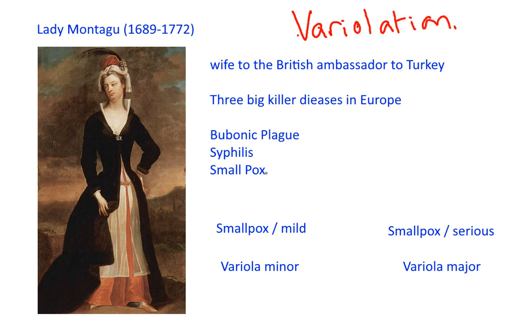This was an early way to deal with one of the three major diseases at the time, smallpox. Bubonic plague was a 14th century disease known as the Black Plague, and syphilis was another bacterial disease. Both of these are bacterial diseases. Smallpox is a viral disease. These were the big three killer diseases in Europe.